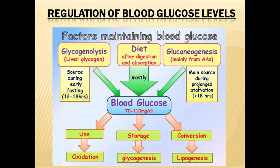Gluconeogenesis occurs when fasting for a prolonged period — more than 18 hours or more than one day. Under such conditions, amino acids, proteins, and fatty acids in the body participate in gluconeogenesis. Through this mechanism, amino acids and fatty acids are converted into glucose, which enters the blood and increases blood glucose levels. These three factors — diet, glycogenolysis, and gluconeogenesis — help increase blood glucose levels.